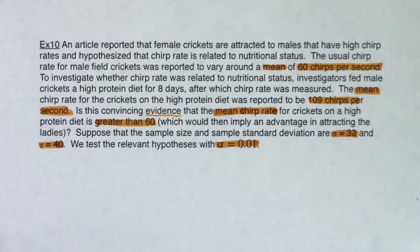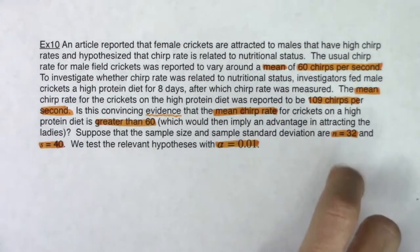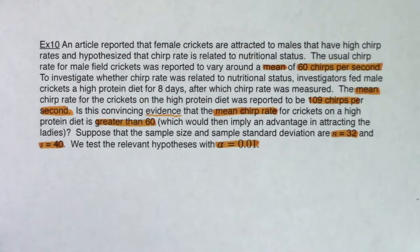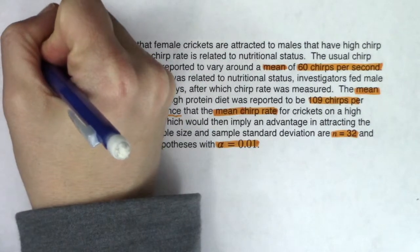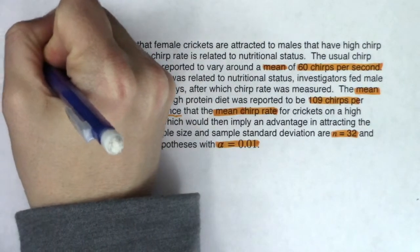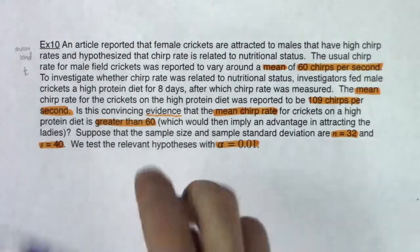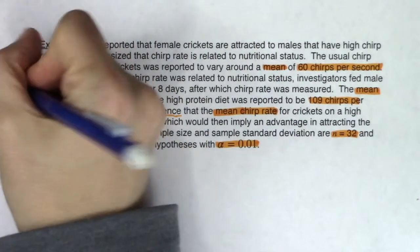I have 32 crickets — sample size is 32 — and the numerical variable among all of those is their chirp rate. Are these crickets that have been hopped up on protein chirping like crazy and attracting lady crickets? Well, let's find out. I'm definitely in mean land, which means I'm going to use a t-test statistic. I also only have one sample — I get that I have 32 crickets in that sample, but I only ran this experiment once — so we're going to do a one-sample test.